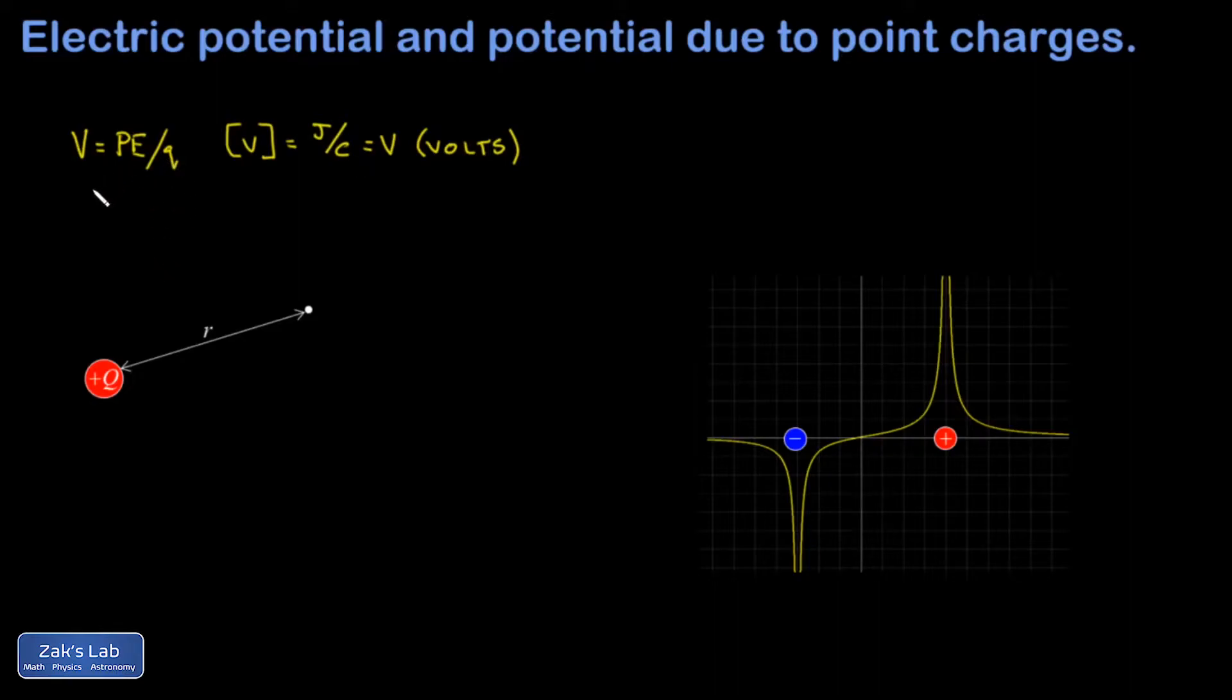And we can turn around the definition of potential to make that point more clear. I can say the potential energy of a test charge is given by the size of that charge multiplied by the electric potential at that point in space. So in the picture down here, I have a positive source charge, and I'm interested in this point, this distance R away from it.